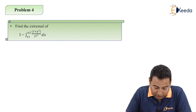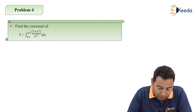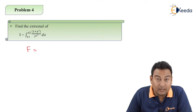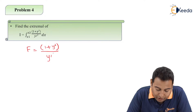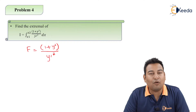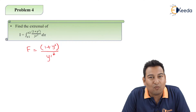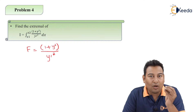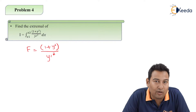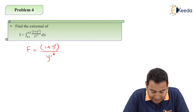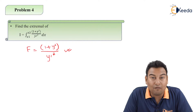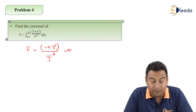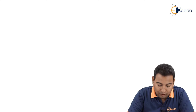The integral is from x₁ to x₂ and the functional is (1 + y²) / y'². First of all, we'll check which Euler equation is applicable. We have five equations discussed in video number one. This functional is independent of x.